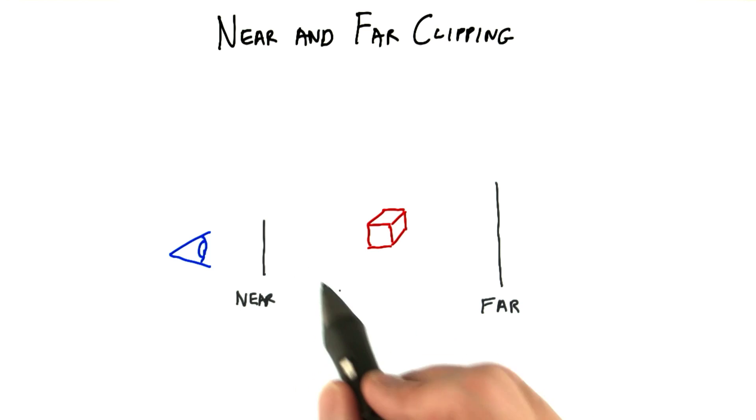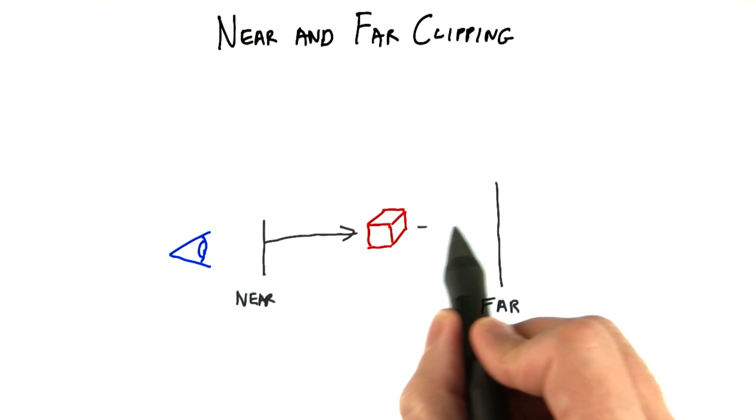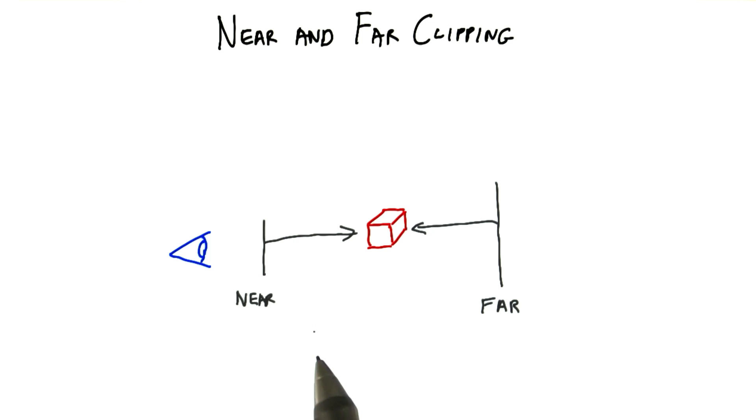The key thing about these two values is you want to set them to be as close together as you can without causing any clipping to occur. The near plane is particularly important to move as far as possible away from the camera.